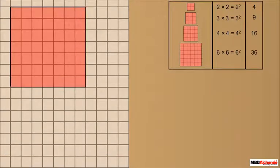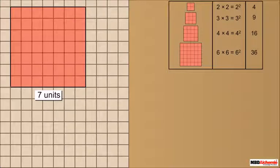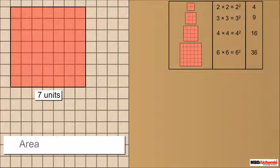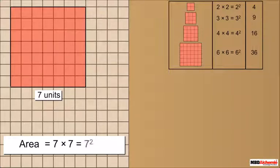Consider a square of side 7 units. It is further divided into 49 unit blocks. The area of this square is 7 into 7, which we write as 7 squared, which is equal to 49.